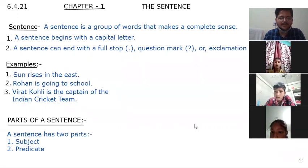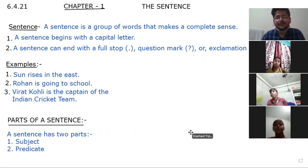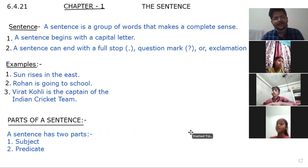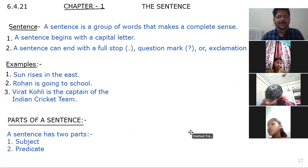So here, what we have written, what is a sentence? A sentence is a group of words that makes a complete sense. It begins with a capital letter and can end with a full stop, question mark or exclamation mark. The examples are: the sun rises in the east, Rohan is going to school, Virat Kohli is the captain of the Indian cricket team.